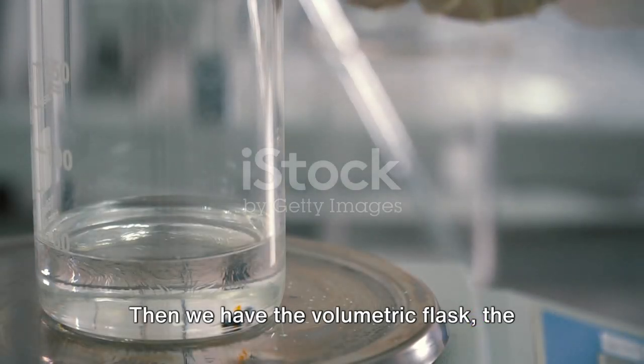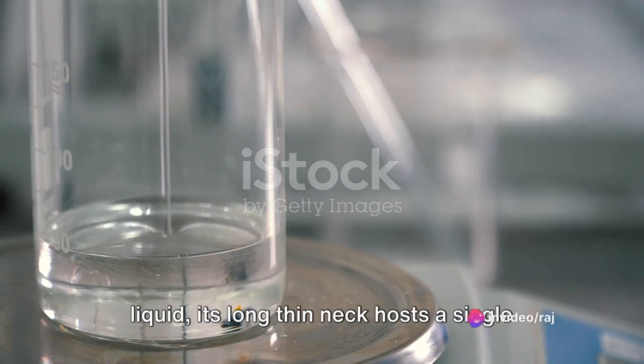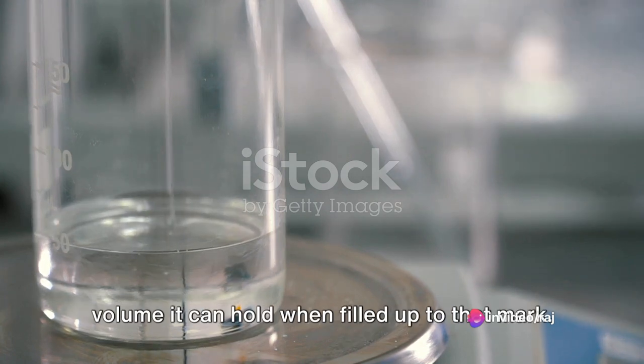Then we have the volumetric flask, the epitome of precision. Dedicated to preparing precise volumes of liquid, its long, thin neck hosts a single calibration marking, indicating the exact volume it can hold when filled up to that mark.